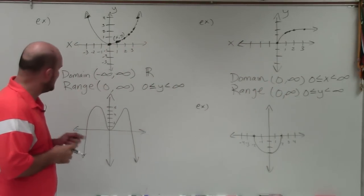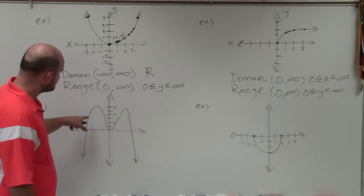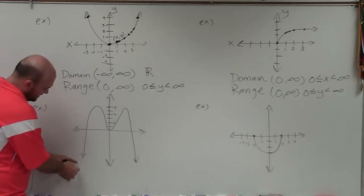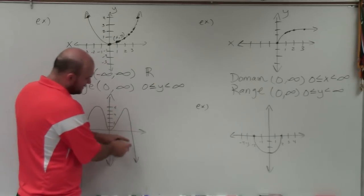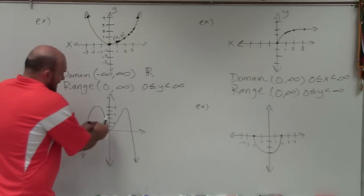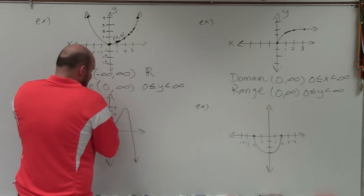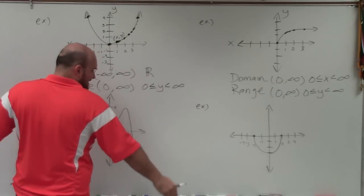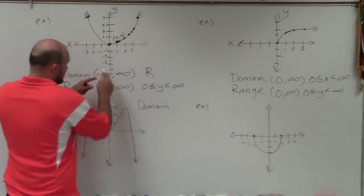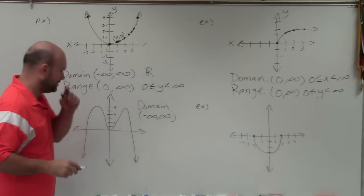Now let's get into this next example. You can see that the domain is constantly getting larger as it goes to the left and constantly getting larger as it goes to the right. There are really no restrictions on the x values. As the x-axis keeps getting wider, the graph keeps expanding. So the domain is going to be negative infinity to infinity, or all real numbers.